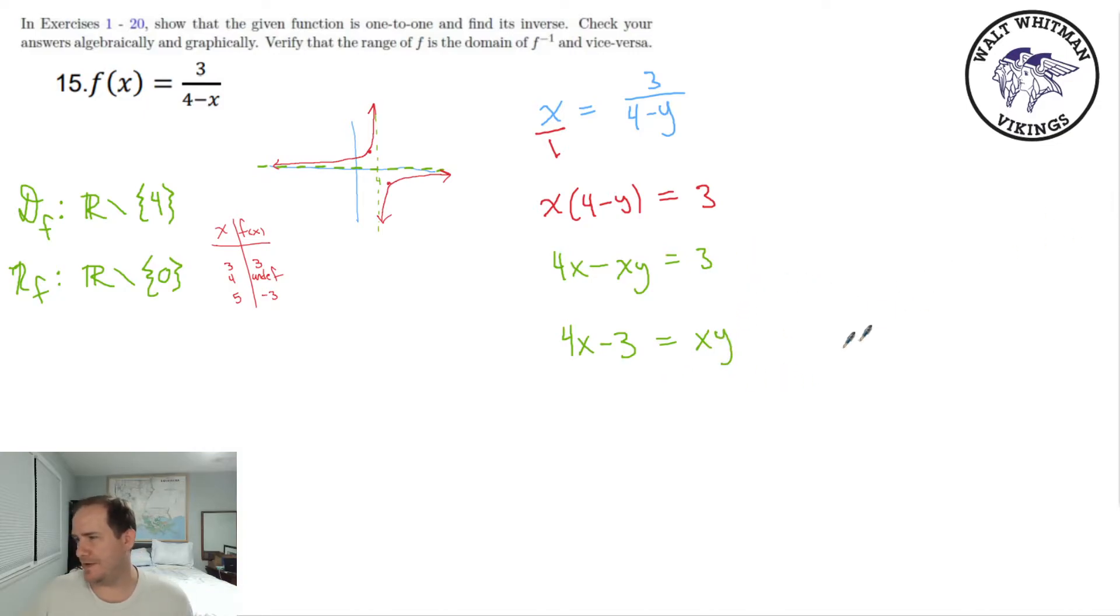And the negative xy, I'm gonna add it to both sides. So there's now a positive xy over here. And then from here, you can see that the only thing left to do is divide by that x. And that'll get y all alone. So apparently our inverse function is (4x minus 3) all over x. That is equal to our inverse function, a.k.a. y. That's it.